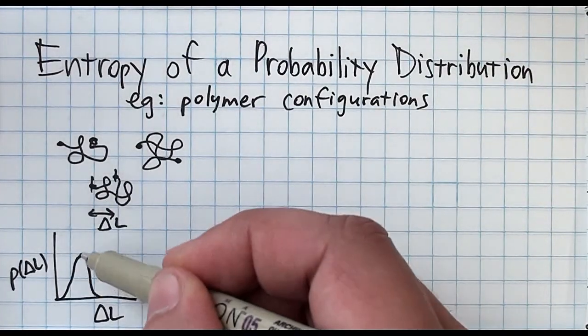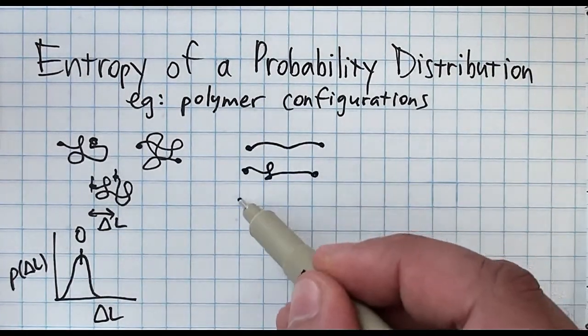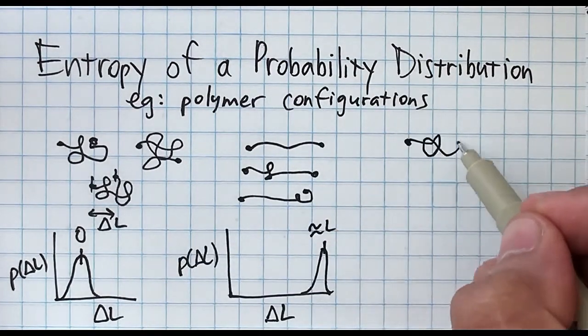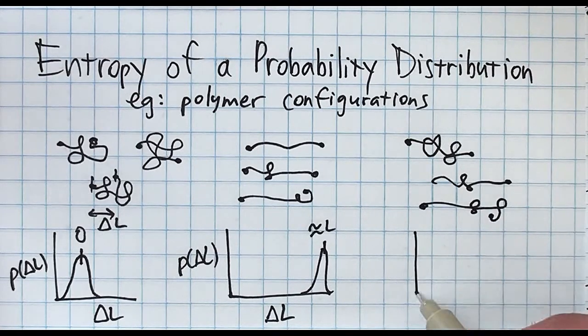For example, we know that if all configurations of a polymer are equally likely, the polymer appears coiled because the number of coiled states outweighs the number of completely extended states.